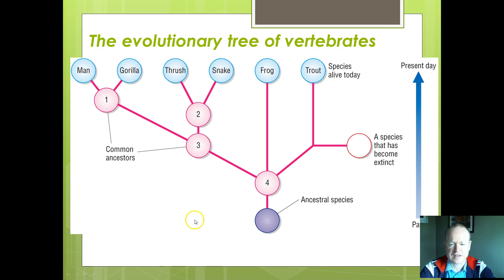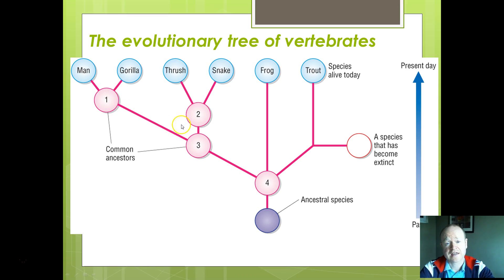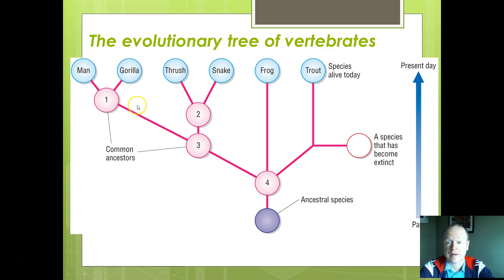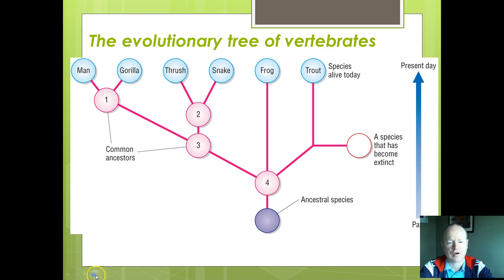You can also look at an evolution tree of all vertebrates, showing that we share the most recent common ancestor with other primates. There's a common ancestor that allows us to branch into mammals versus birds and snakes — so birds and snakes have a more recent common ancestor with each other than they do with mammals. This gives us a more true idea of which family organisms might belong in.